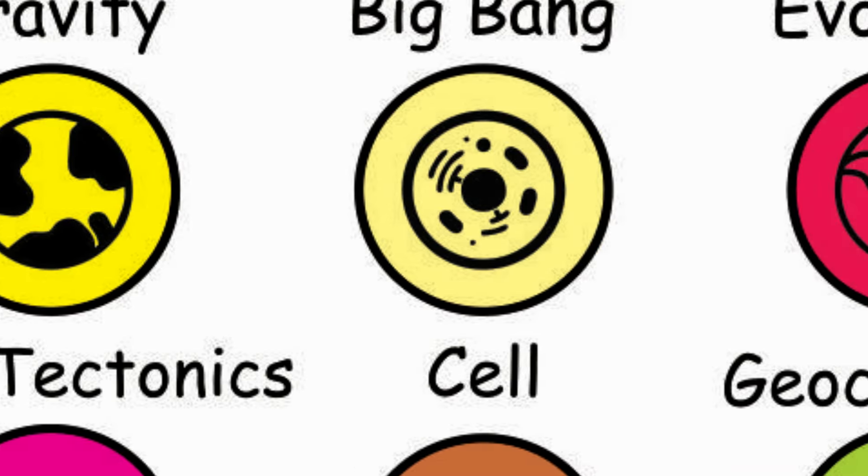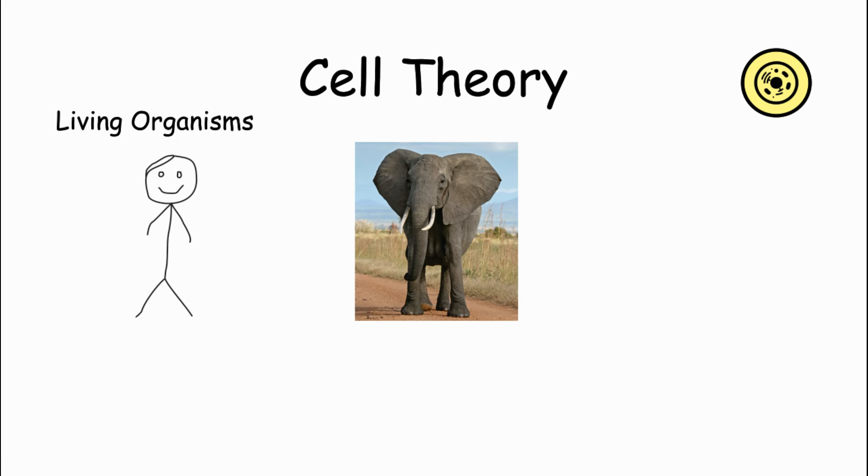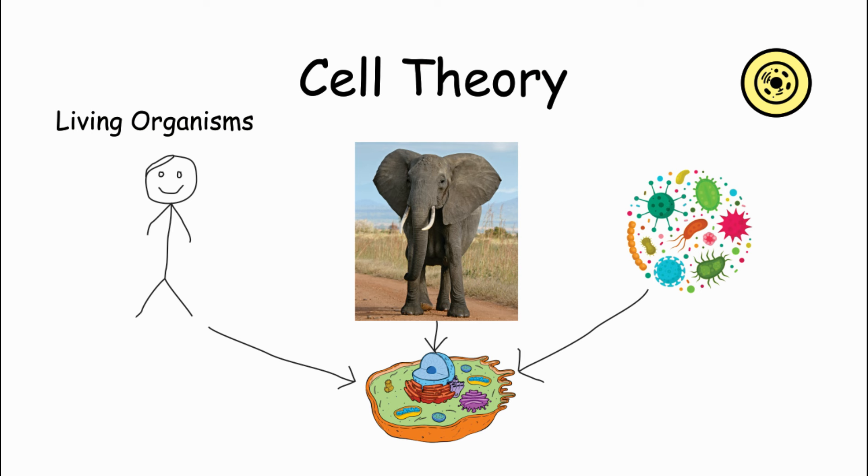Cell Theory: The theory which was discovered in mid-19th century explains that all living organisms, whether they are humans, elephants, or bacteria, are made up of one or more cells. They are simply the building blocks of all living organisms.